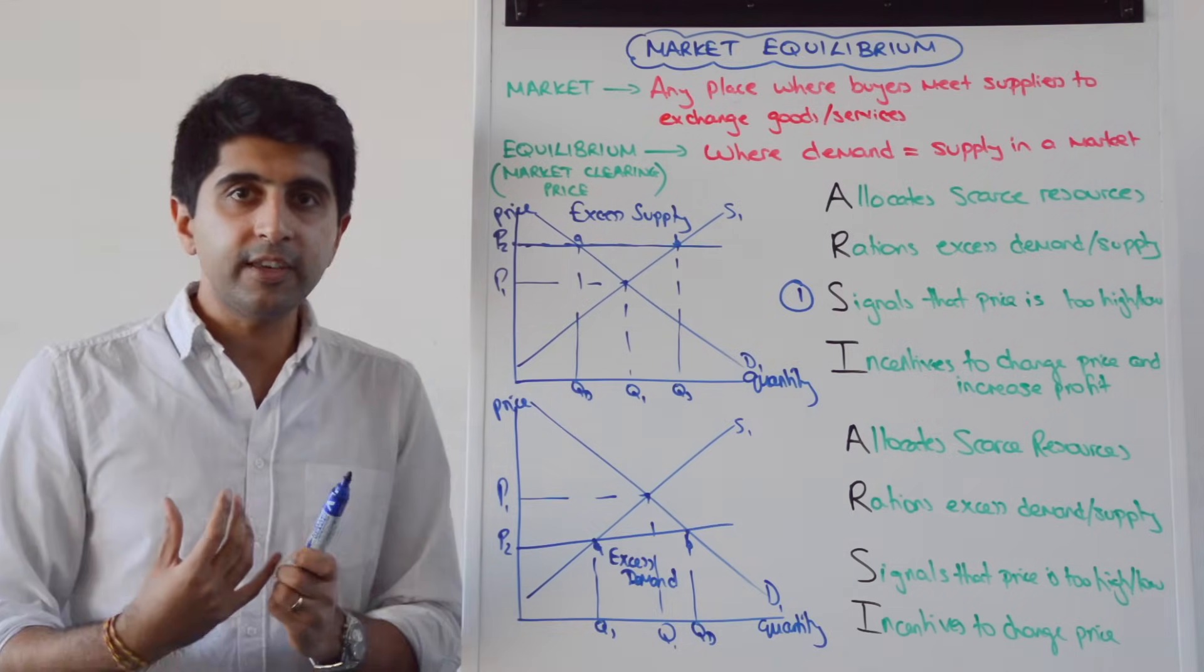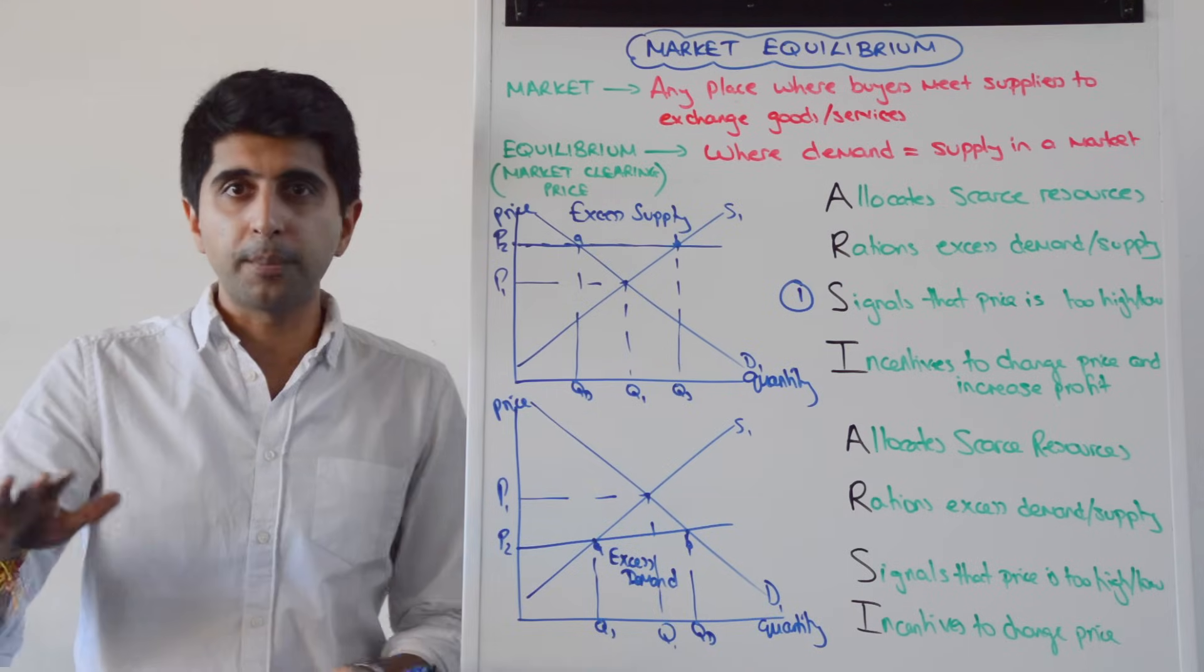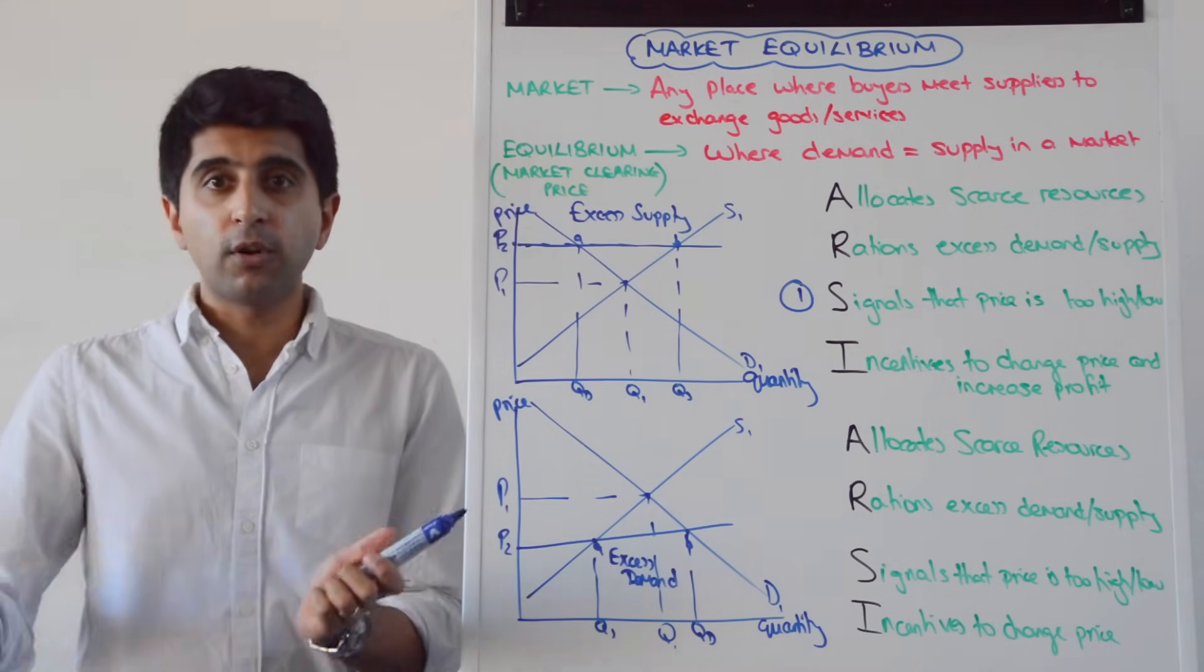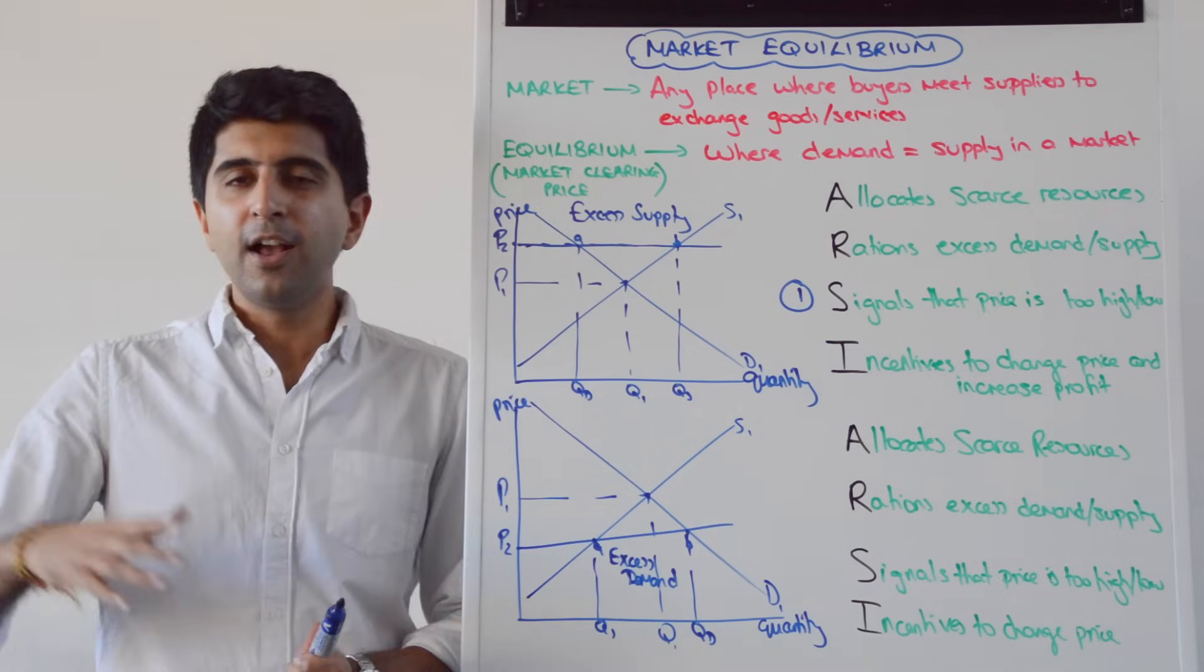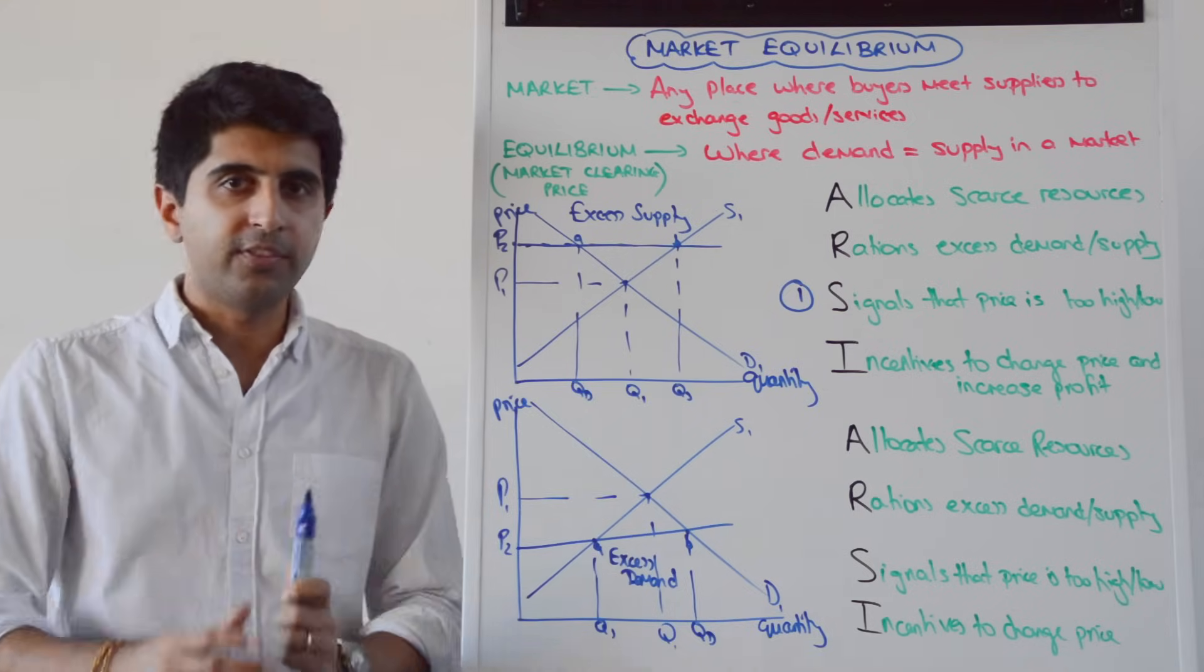Well, the first thing that happens is that the signal is sent to producers that this price is too high. How do producers know? What is the signal? Well, they see excess stock in their warehouses. They see their shelves in their shops are full of stuff. It's not being sold. If it's a restaurant, they see that the tables are constantly empty. All the ingredients is left in the kitchen.